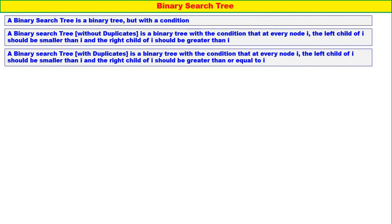A binary search tree with duplicates is a binary tree with the condition that at every node i, the left child of i should be smaller than i and the right child of i should be greater than or equal to i. So with duplicates, whenever you get equal elements, you put it to the right side. Whereas without duplicates, duplicates are not allowed in the binary search tree at all. There are two different definitions for binary search tree with duplicates and without duplicates.